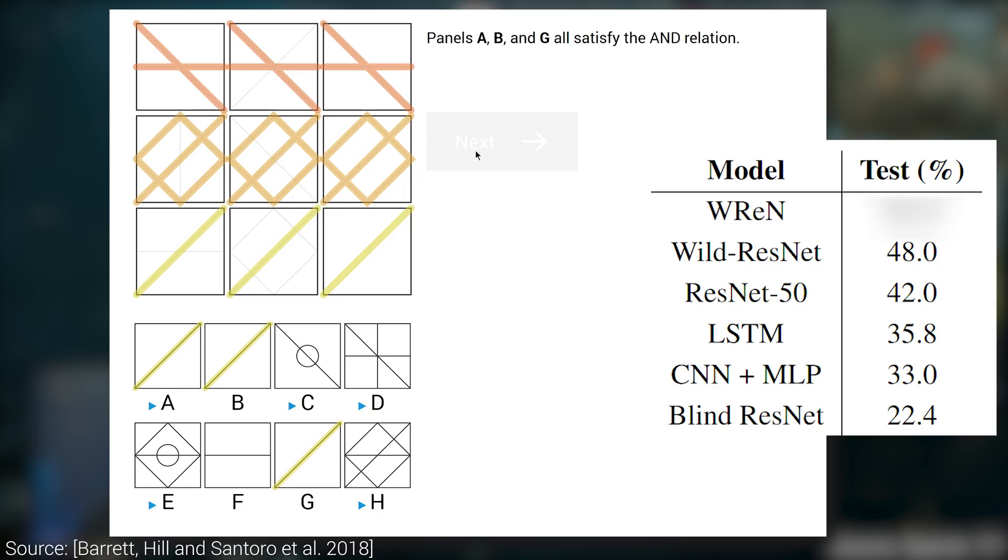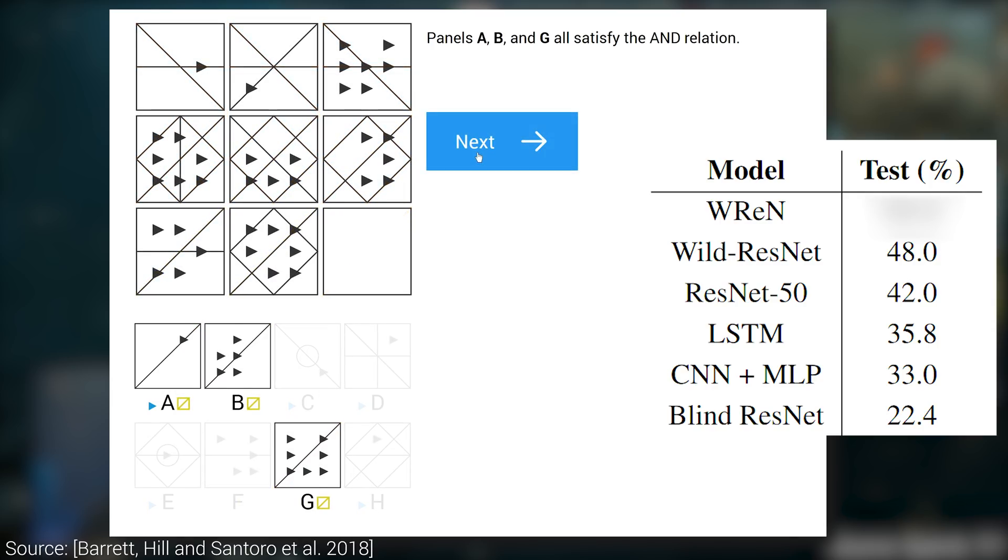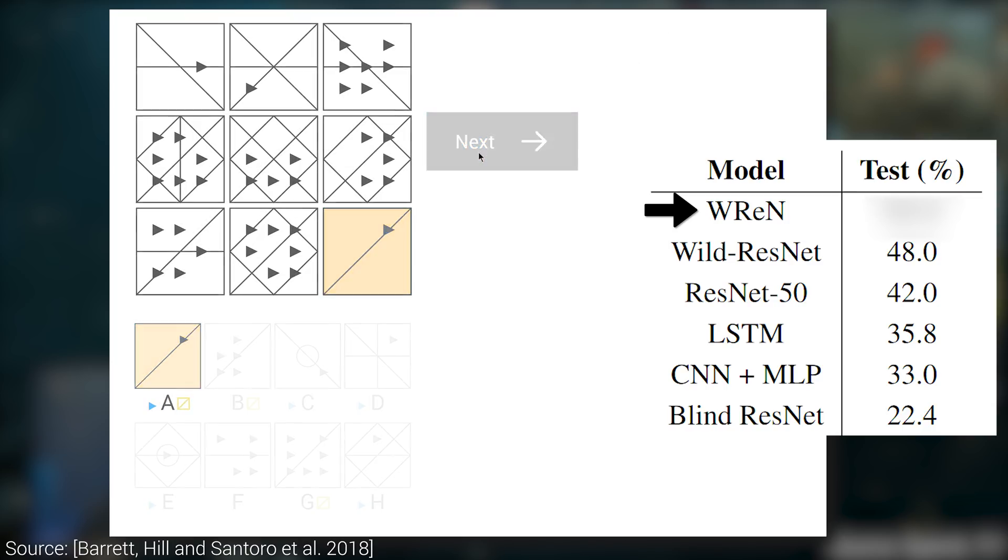Therefore, this means that their generalization capabilities are not too great when we go outside their core domain. This new technique goes by the name Wild Relation Network, and is trained in a way that encourages reasoning.